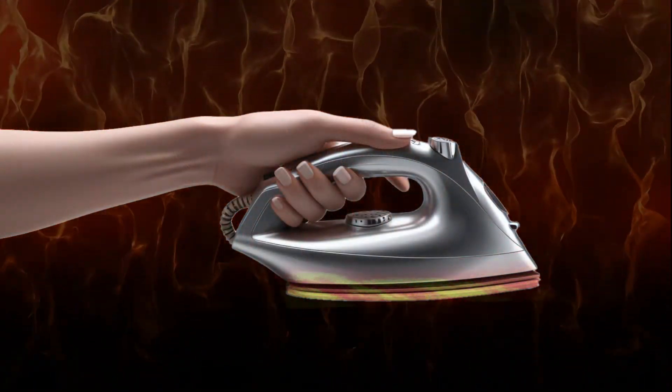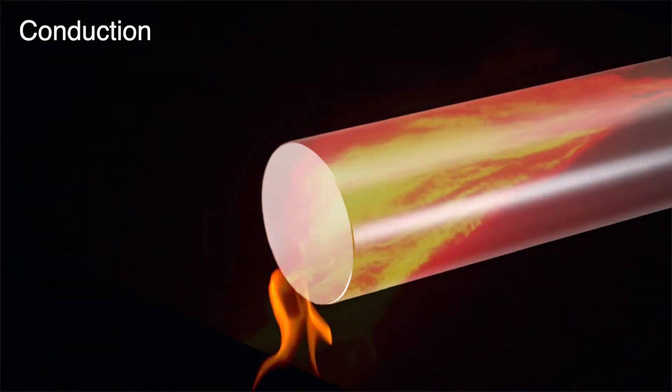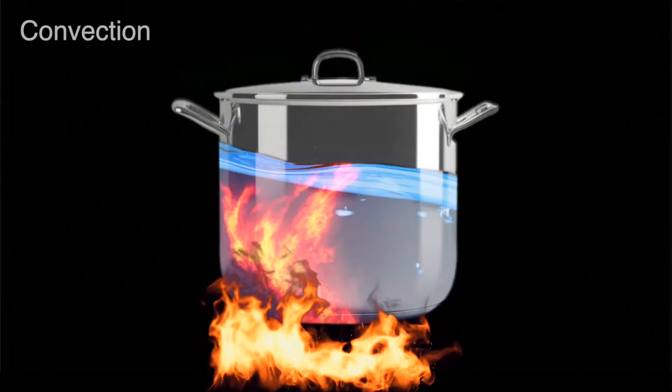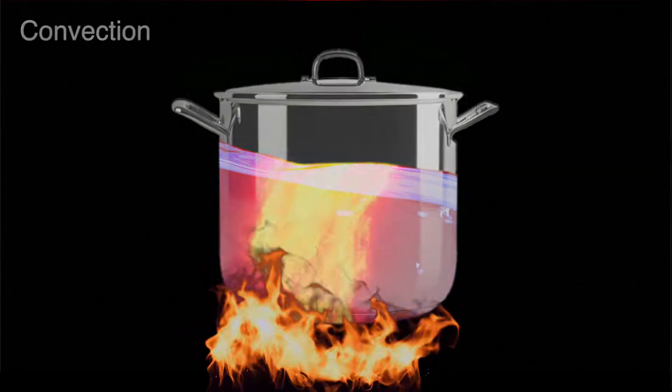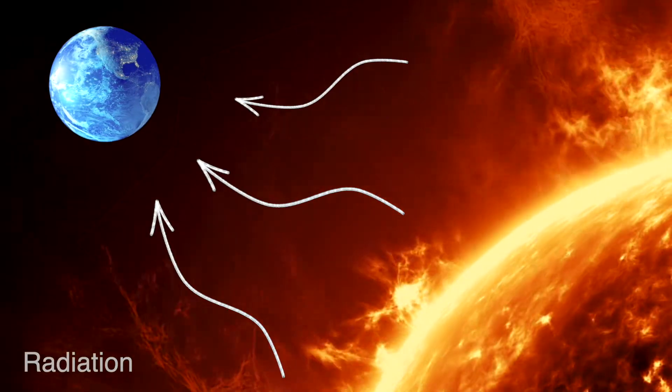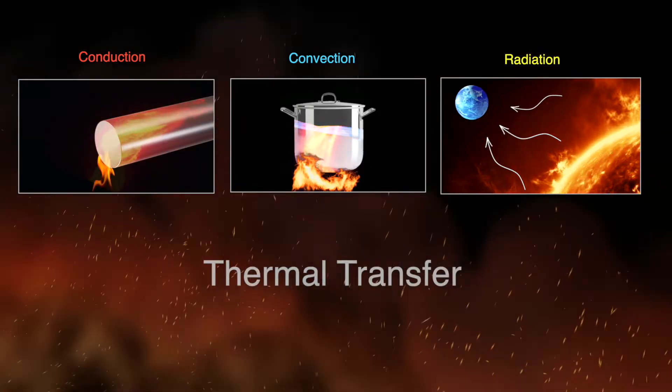Heat energy is everywhere, constantly moving from one place to another. When heat moves through a solid, it's called conduction. In liquids and gases, heat transfer occurs through convection, while in empty spaces such as a vacuum, it happens through radiation. But how do these processes really work? Let's explore how thermal transfer happens.